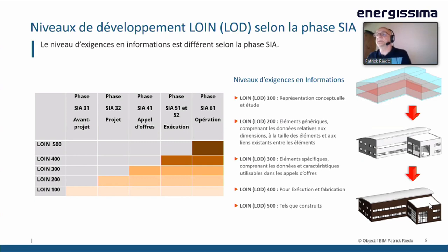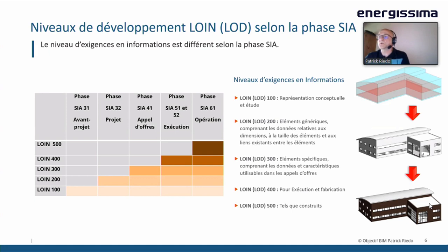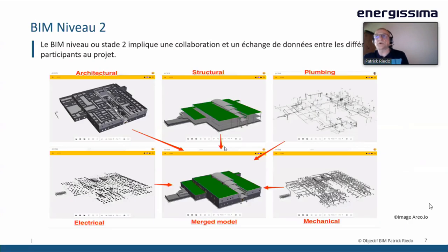Ce qu'il faut se rendre compte avec ce modèle BIM, c'est qu'il va progresser. On ne va pas commencer dès les premières phases avec un modèle très détaillé. Au fur et à mesure, la géométrie va se détailler, et on va avoir de plus en plus d'informations ajoutées dans ces modèles. Quand on parle d'un BIM de niveau 2, c'est un BIM de collaboration où chaque discipline va produire son propre modèle. On va les assembler et utiliser un modèle de coordination pour faire la détection des conflits entre les différentes disciplines.